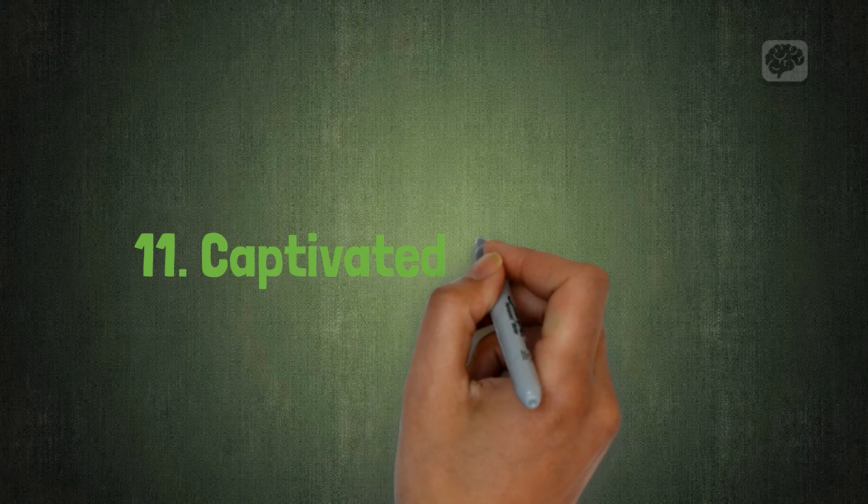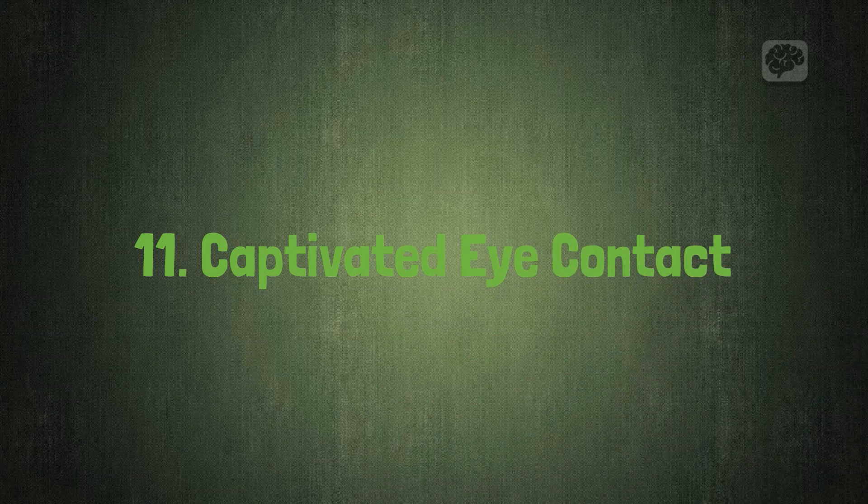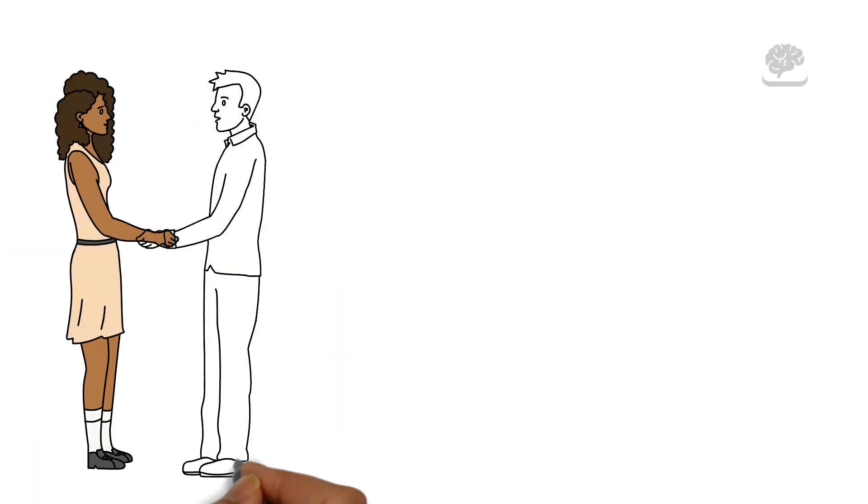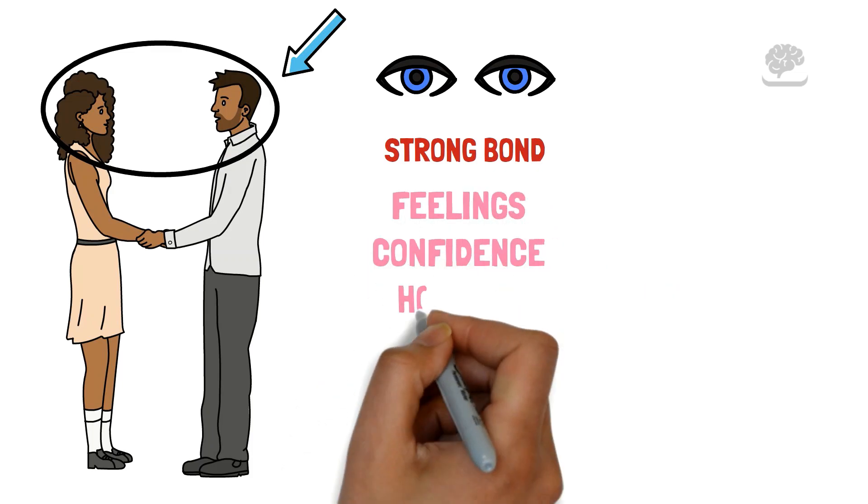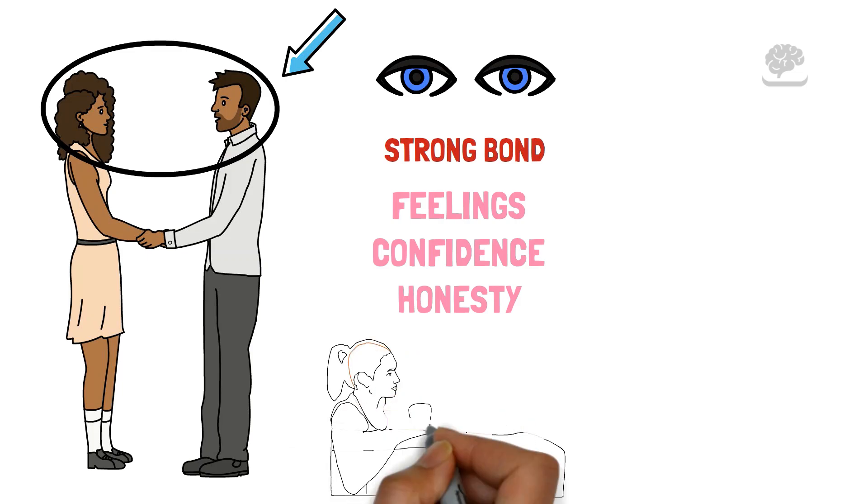Number 11: Captivated Eye Contact. Holding eye contact attracts people more than just by looks. When you can keep eye contact that shows a strong bond and draws others in, people want to look into your eyes and find it hard to look away. This kind of eye contact lets you talk without words, showing deep feelings, confidence, and honesty. It builds a close and interesting connection, going beyond basic talking.